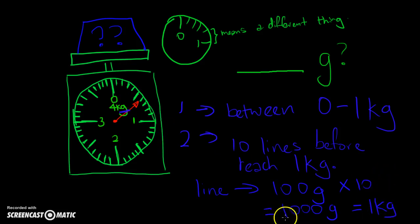And from 1 kg, I actually have 1,000 grams. And when I divide it by 10 lines, so it's 1,000 divided by 10, I know that 1 line actually gives me 100 grams.